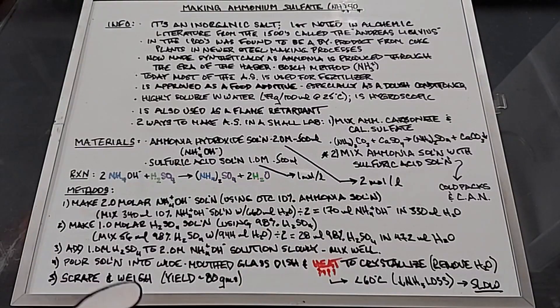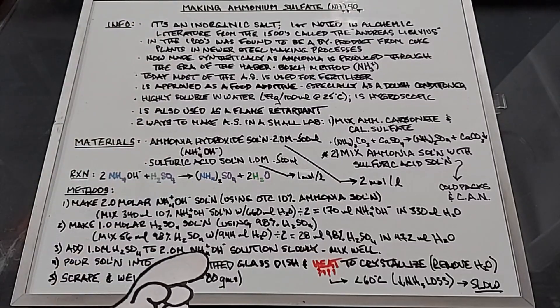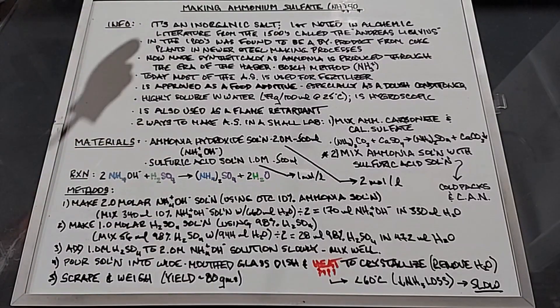Okay, we've got crystallization. I want to scrape it out good and weigh it. The yield should be around 80 grams of ammonium sulfate. Let's go make some ammonium sulfate.